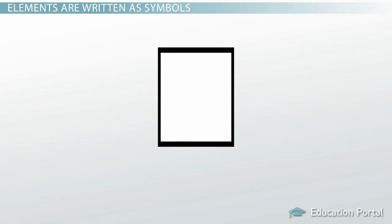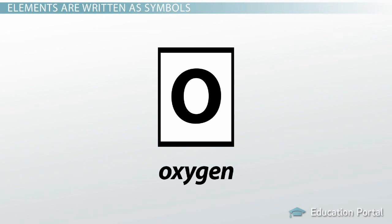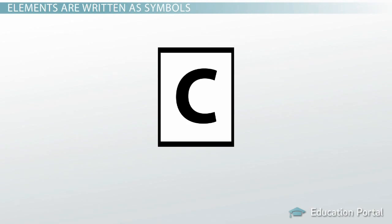Instead of writing the whole elemental name, elements are often written as a symbol. For example, O is a symbol for oxygen, C is a symbol for carbon, and H is a symbol for hydrogen.